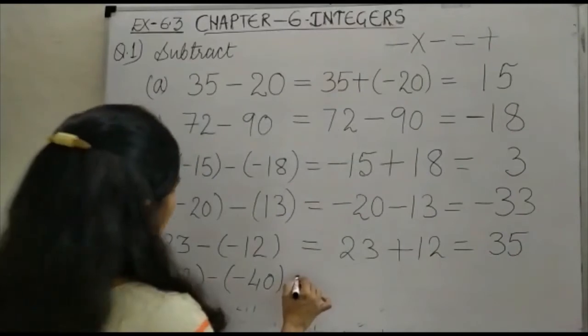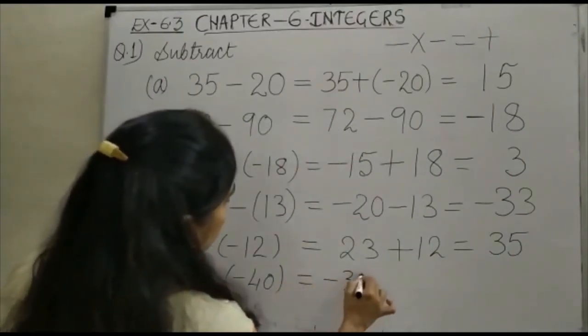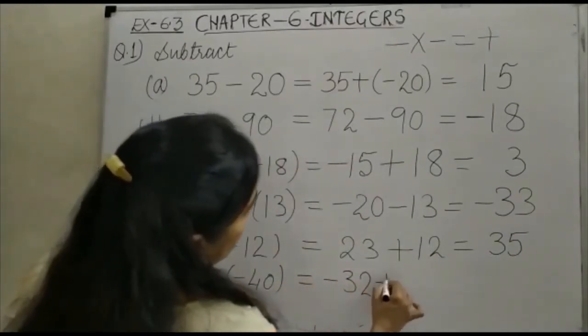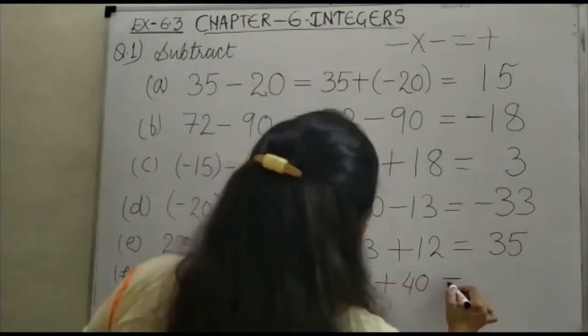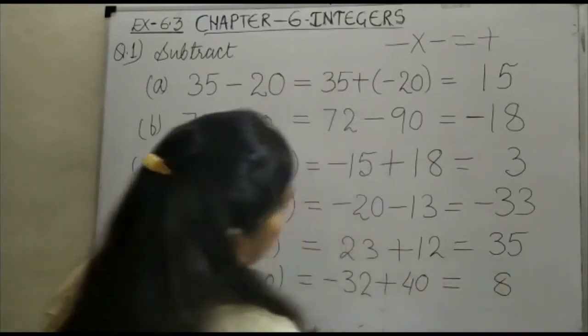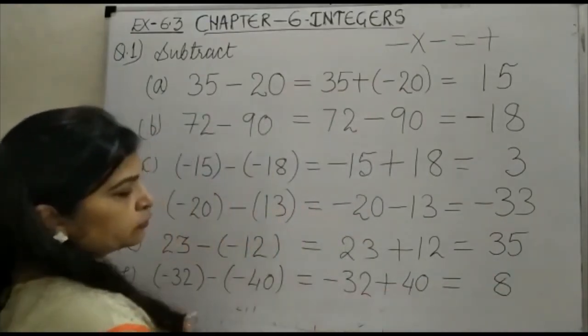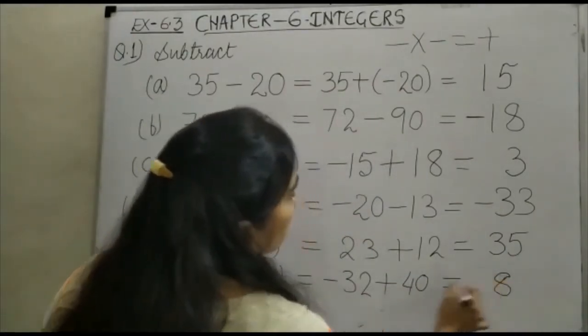Next is minus 32 minus minus 40. Once again we will have the same thing, minus into minus plus. So this becomes 8. You can see the sign of the big number is positive, so this will be your positive 8.